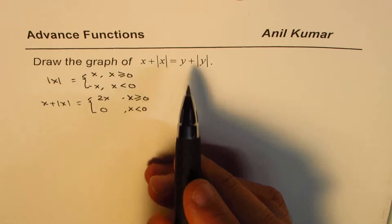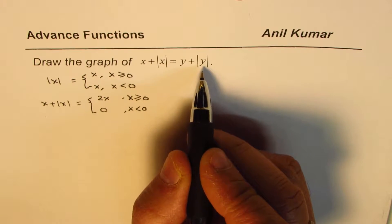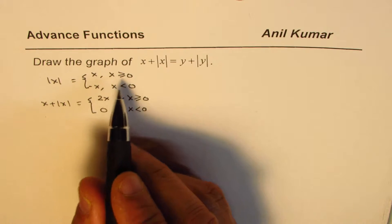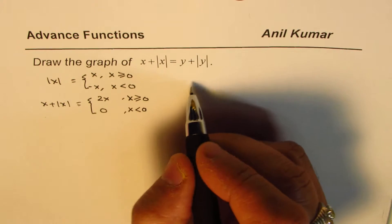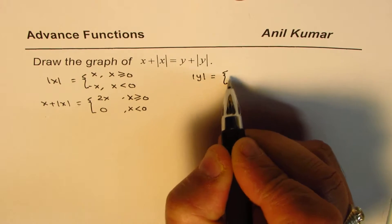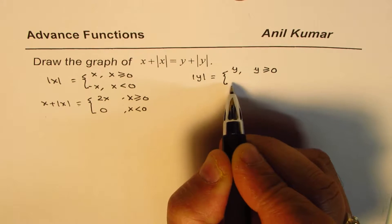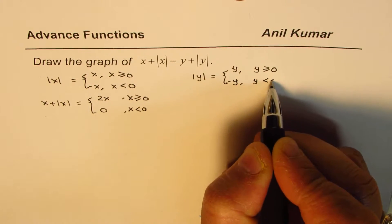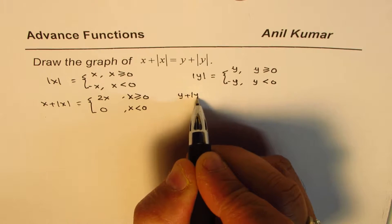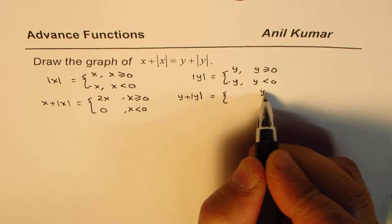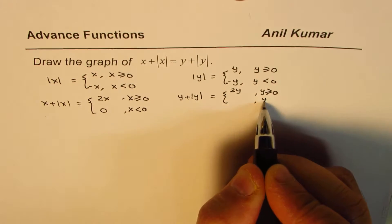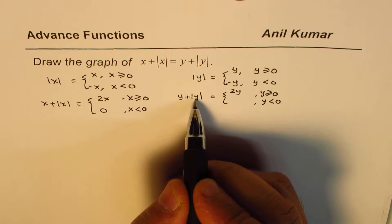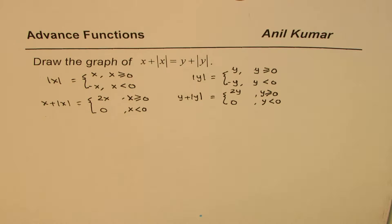Similarly, for the right side, we can write y plus absolute y as a piecewise function. Absolute y is defined as y for y greater than or equal to 0, and minus y for y less than 0. Therefore, y plus absolute y equals 2y if y is greater than or equal to 0, and equals 0 if y is less than 0.